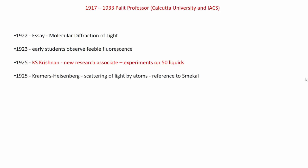Around 1925, Kramers and Heisenberg published a very important theoretical paper on the scattering of light by atoms, referring also to work done by Smekal. Kramers and Heisenberg mentioned that there can be another kind of scattering due to an interesting exchange of energy between light and atoms. This was still the pre-quantum mechanics era, and this hypothesis by Kramers and Heisenberg gave a direction suggesting that the feeble fluorescence Raman and his students were observing was not conventional fluorescence but had some quantum nature to that interaction.